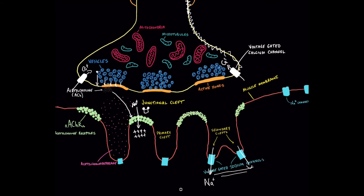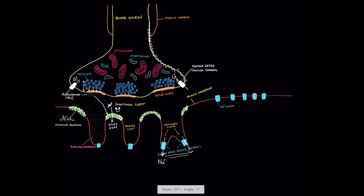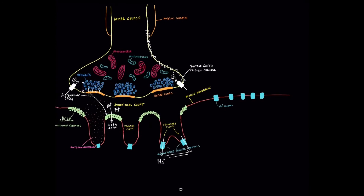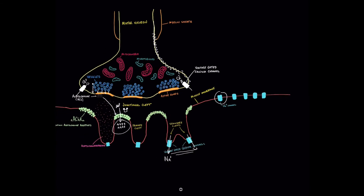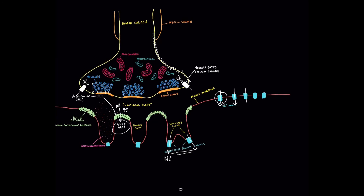The acetylcholine receptors are really only present in the neuromuscular junction area. The rest of the muscle membrane, the area not directly connected to a nerve, doesn't have many acetylcholine receptors. Under normal circumstances it's the sodium channels that propagate the reaction. When these sodium channels sense the change in charge of the muscle membrane, they open as well and sodium rushes down into the muscle cell. This creates a wave of depolarization that travels all the way down the muscle cell and ultimately leads to muscle contraction.